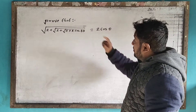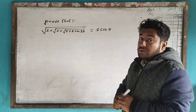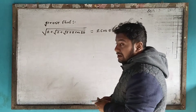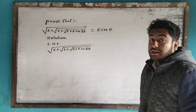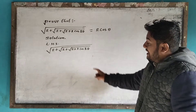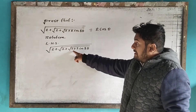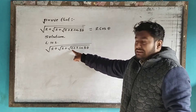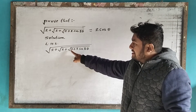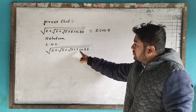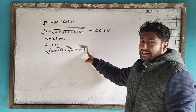So, the question is: 2 plus 2 cos 8 theta.